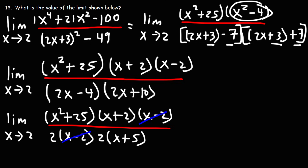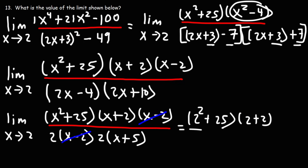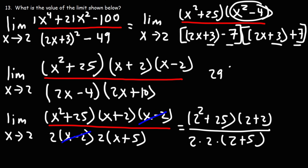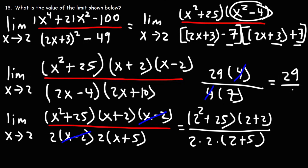So now we can cancel x minus 2, and at this point we can use direct substitution. Replacing x with 2, we're going to have 2 squared plus 25, times 2 plus 2, on the top. On the bottom we have 2 times 2, times 2 plus 5. 2 squared is 4; 4 plus 25 is 29. 2 plus 2 is 4. On the bottom, 2 times 2 is 4, and 2 plus 5 is 7. We can cancel the 4, and we're left with the final answer, which is 29 over 7.